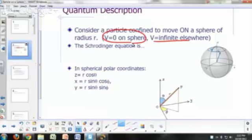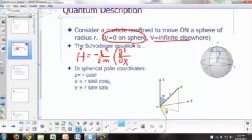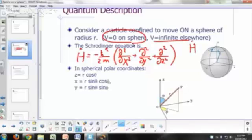What's the Schrödinger equation for this? H hat equals negative h bar squared over 2 times the mass times second derivative with respect to x plus second derivative with respect to y plus second derivative with respect to z. That's a Hamiltonian. And the Schrödinger equation is H hat psi equals E psi.